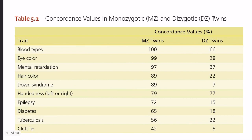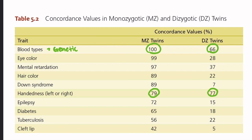We can look at some concordance values of monozygotic and dizygotic twins. For blood type, monozygotic twins have 100% concordance, whereas dizygotic twins have 66% concordance. This tells us that it is a genetic trait. Then let's look at handedness — monozygotic twins have 79% while dizygotic twins have about 77%. This may not be purely genetic because the concordance levels are about the same.